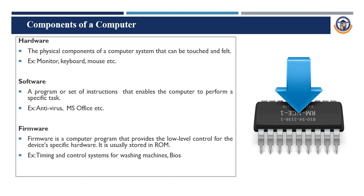For example, when we add two numbers, there is coding involved. Examples of software include MS Office, antivirus, and so on. Then there is firmware — firmware is a computer program that provides low-level control for a device.